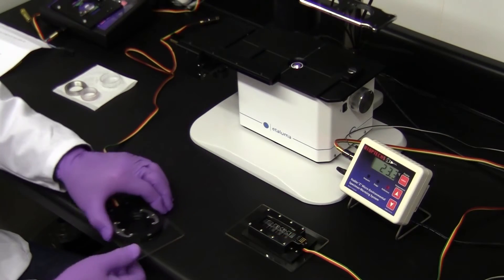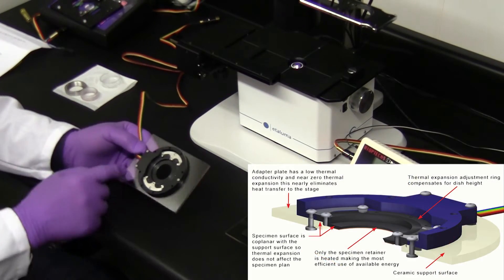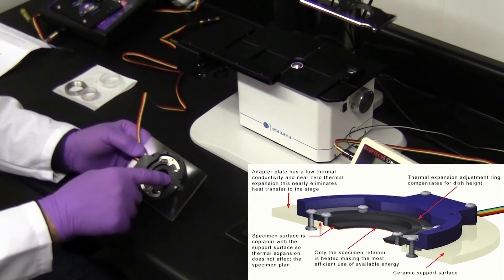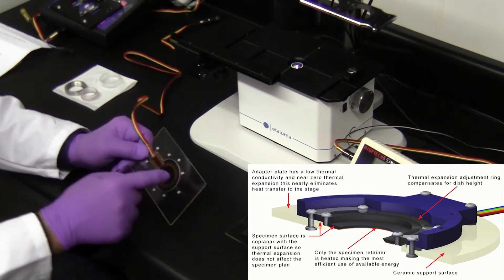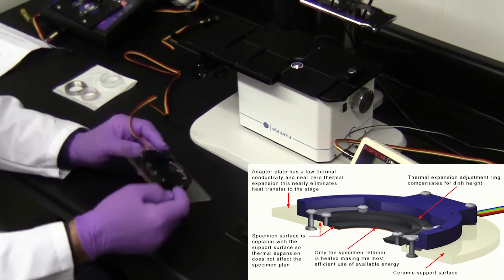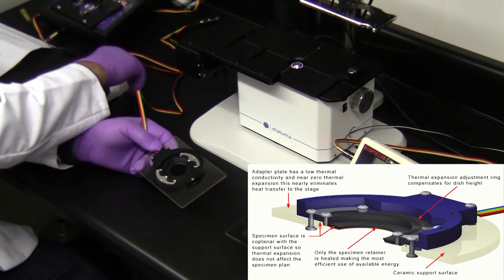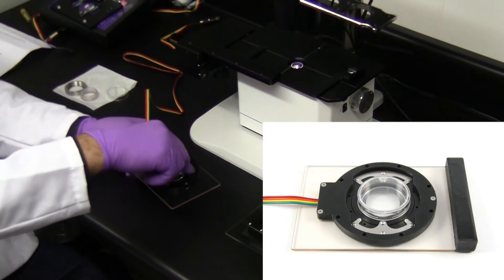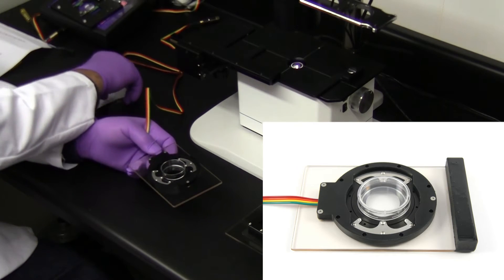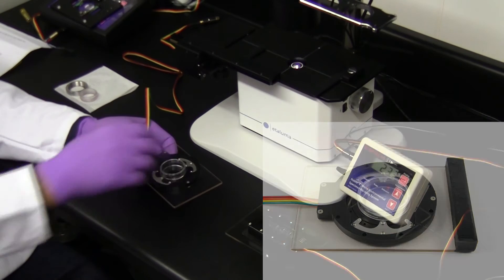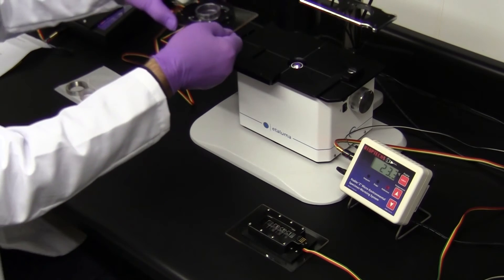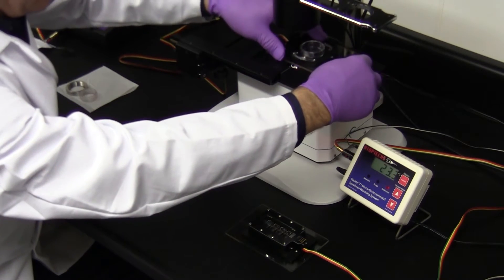Here I am demonstrating the stage adapter for a stable-Z specimen warmer. It is the only peripheral warmer that does not induce Z-axis drift to the specimen plane, an important feature for time-lapse imaging. It can be used with 35mm dishes, ICDs, and with the appropriate adapter, the Nunc Lab-Tec chamber slides.